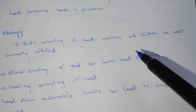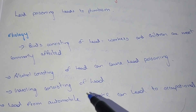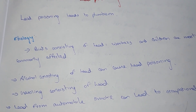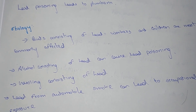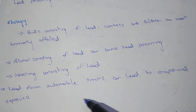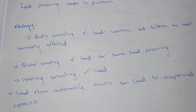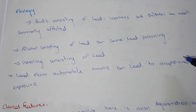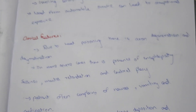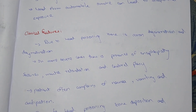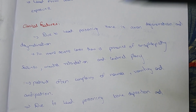The most commonly affected individuals are workers and children. Causes of lead poisoning include paints containing lead, alcohol containing lead, and gasoline containing lead. Lead from automobile smoke can also lead to occupational exposure.